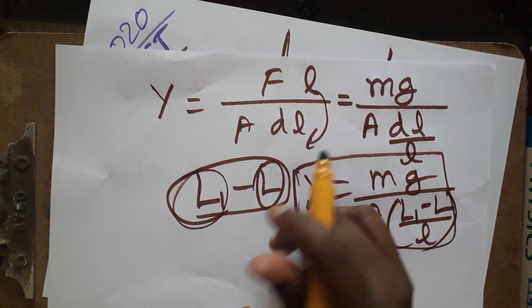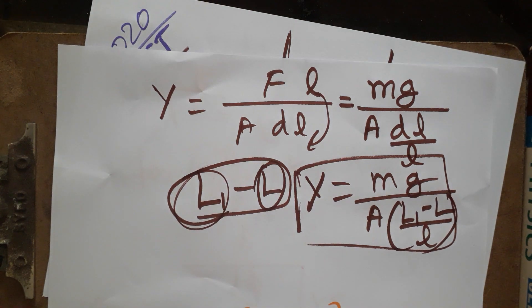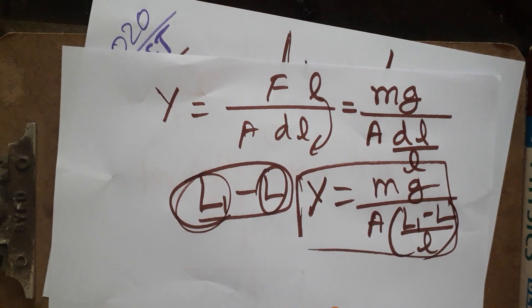Why do we have to subtract these two values? Because this is the final length and this is the initial length. Usually when we are studying modulus of elasticity, we learn with change in length. In this case, final length and initial length are given, so we relate with this equation.